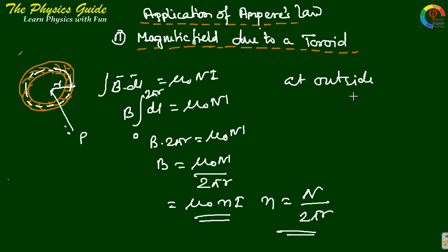Outside the toroid, Ampere's law gives B·dl = 0. Thus B = 0.